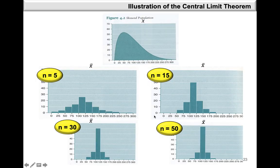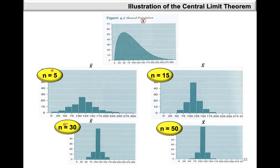For a population that comes from a positively skewed distribution, we again examine sample means at increasing sample sizes. At sample size 5, the distribution is still slightly skewed to the right with a large spread. At size 15, the variability of the sample means is decreasing. At size 30, the distribution of sample means is approximately normal with a very small spread. At size 50, the spread is even smaller as variability decreases further, and sample means are more clustered closer to the population mean.